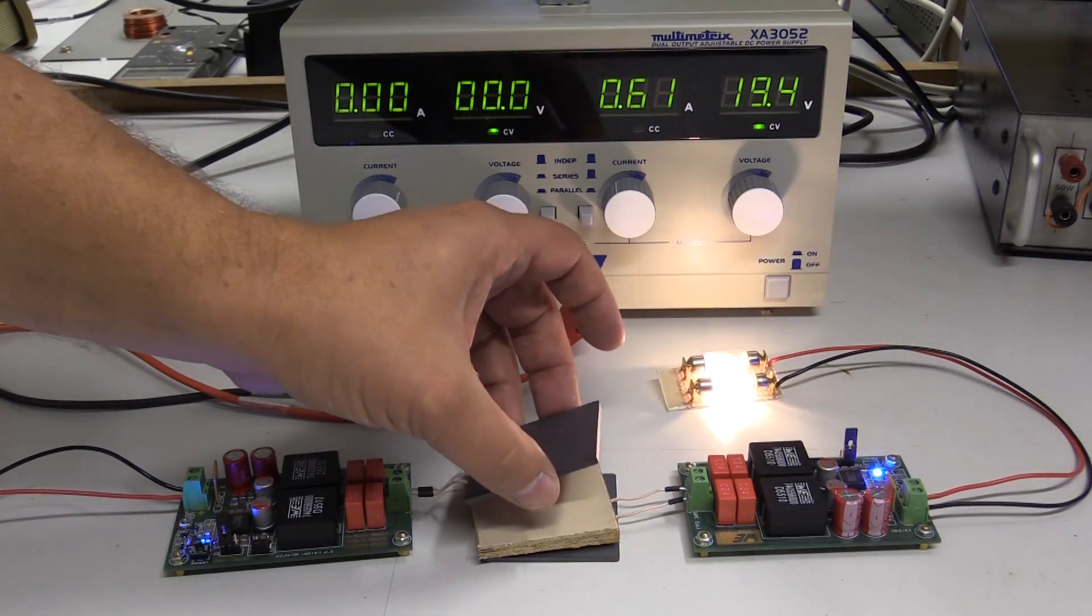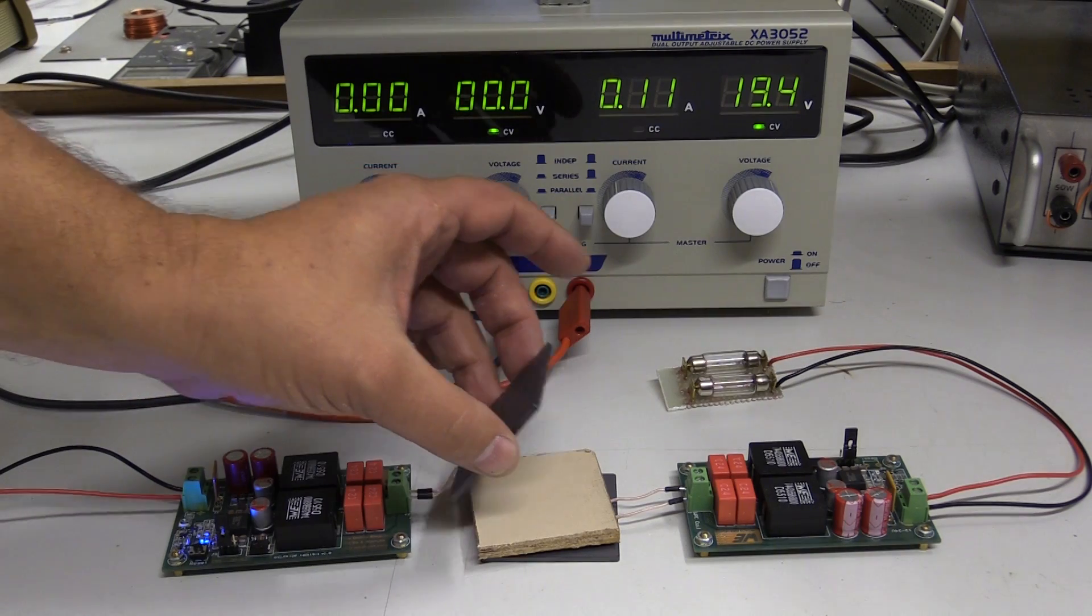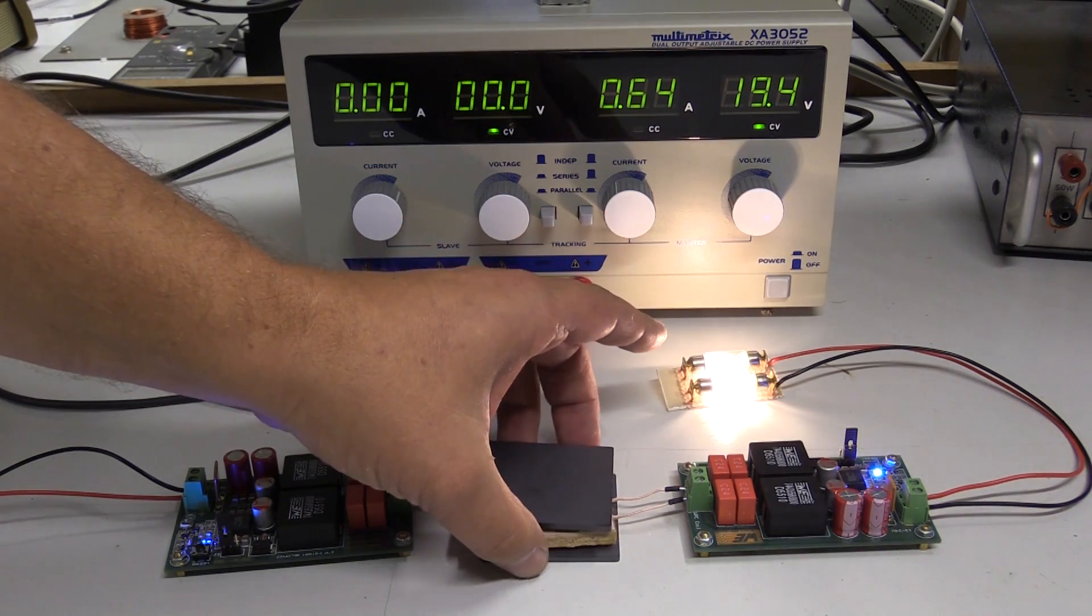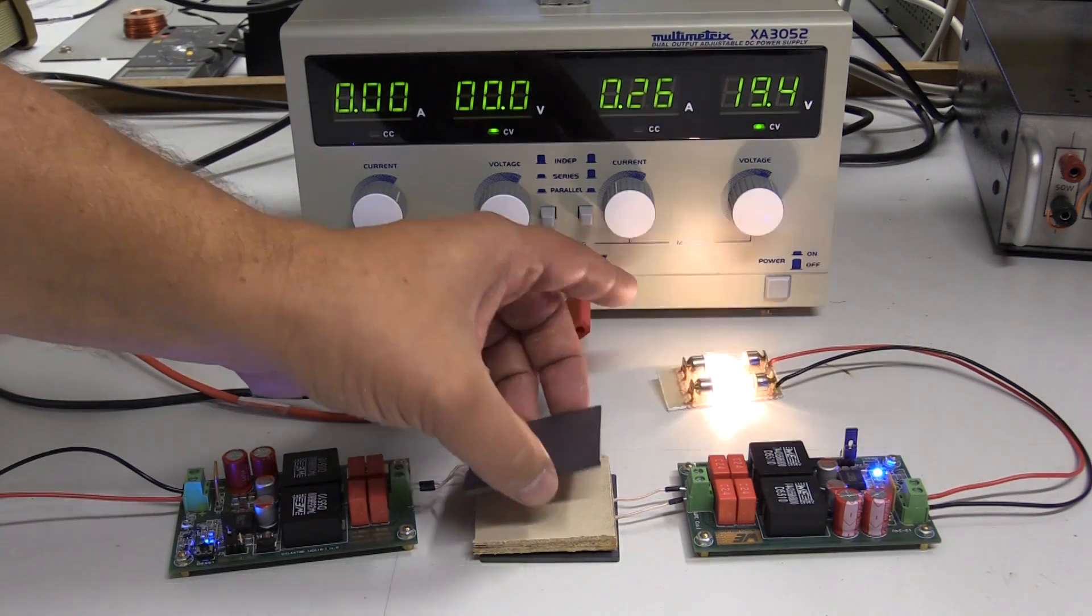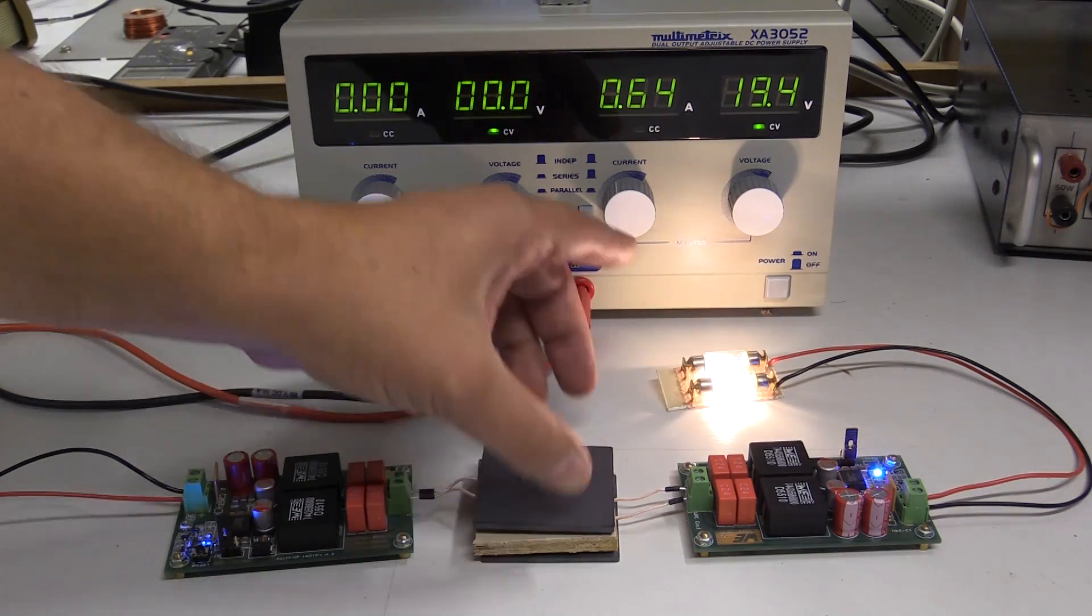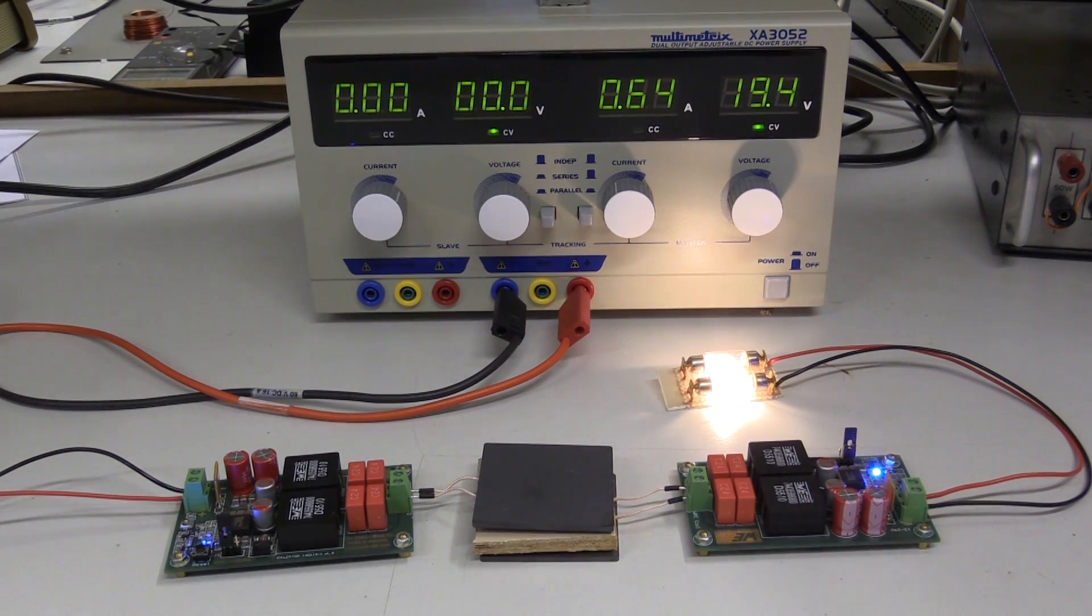The output voltage on the receiver PCB is almost the same as the input voltage. The efficiency remains stable within a distance of 4 to 10 millimeters between the two coils. A maximum distance of up to 18 millimeters is possible depending on the application.